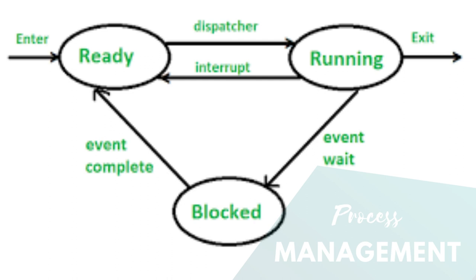Process states. Running: this is when a process is currently being executed by the computer's processor. Only one process can run on a single-core CPU at a time, while multiple processes can run simultaneously on a multi-core CPU. Ready: when a process is ready, it means it's prepared to be executed but is waiting for the processor to be assigned to it — it's like waiting in a queue, ready to take its turn. Blocked: sometimes a process needs to wait for something, like user input or the availability of a resource held by another process. When this happens, the process enters a blocked state until the required event or resource becomes available.